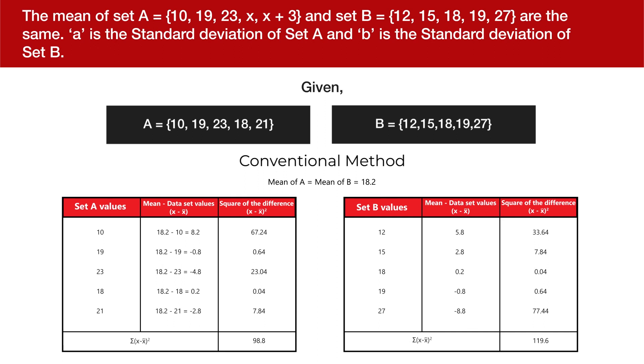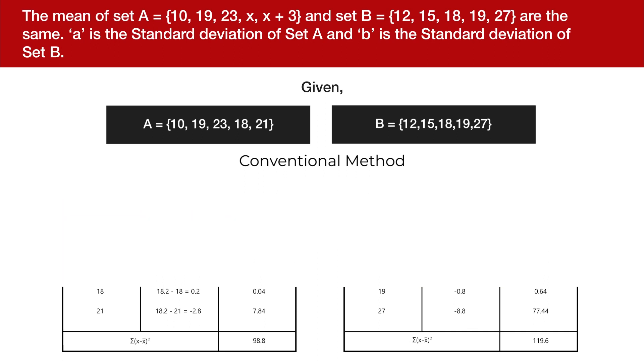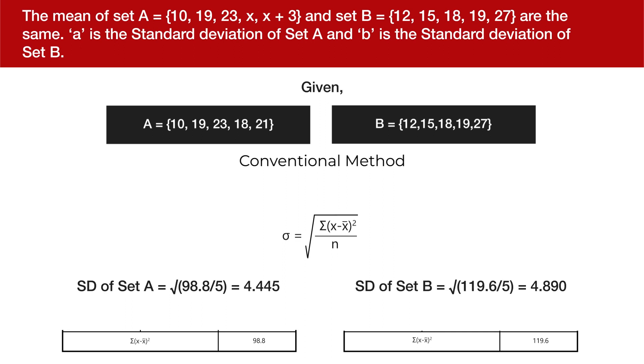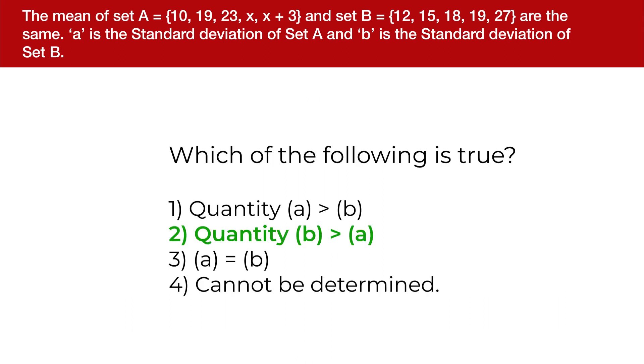Now substituting this in the formula, the standard deviation of set A would turn out to be 4.445 approximately and standard deviation of set B would turn out to be 4.890 approximately. Hence it is very clear that quantity B is greater than quantity A which makes option 2 as the correct answer.